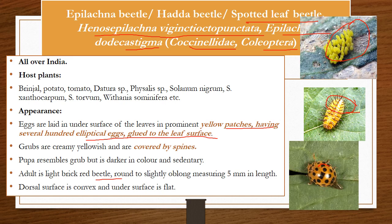The next most important pest is the Epilachna beetle, also known as Hadda beetle or spotted beetle. It contains two important species: Epilachna vigintioctopunctata and Epilachna dodecastigma. Both species cause severe damage in the case of brinjal. They belong to the family Coccinellidae, order Coleoptera — which contains elytra type wings. They are distributed all over India (cosmopolitan pest) and will cause damage to all Solanaceae crops including medicinal and weed plants.